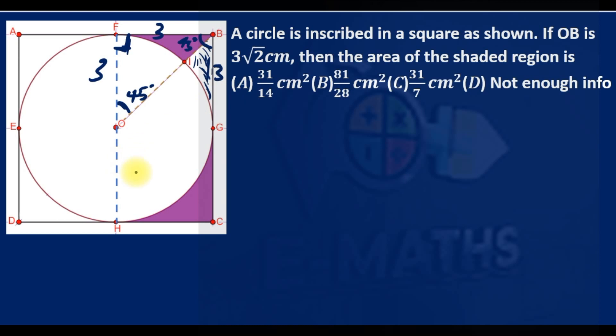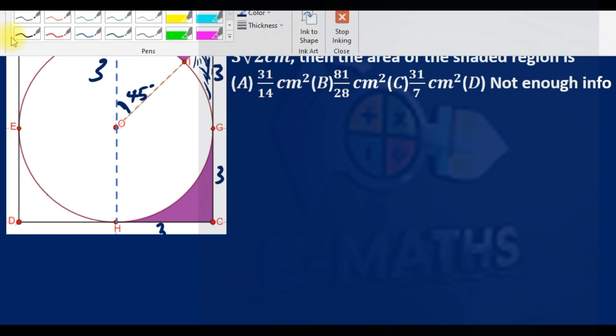Yes, so we now have a rectangle of side—this is also 3—of sides 3 and 6. We have a circle of radius 3 cm. So what we are looking for is the area...